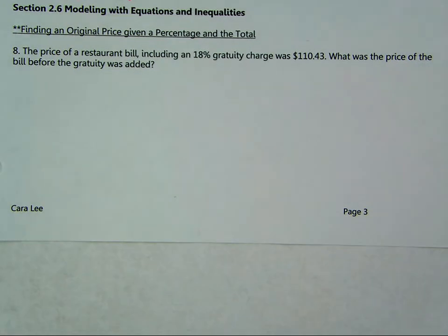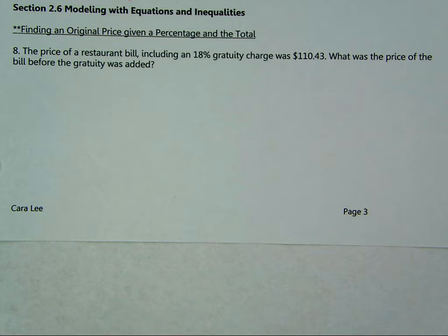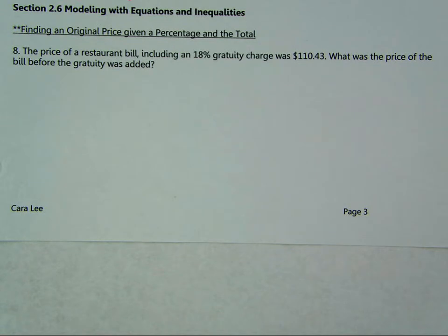The first problem has to do with percentages. It says: the price of a restaurant bill, including an 18% gratuity charge, was $110.43. What was the price of the bill before the gratuity was added? In some of these problems, we don't know the bill and we don't know the actual amount of the tip. We can't use A equals P times B, because we don't know the part and we don't know the whole.